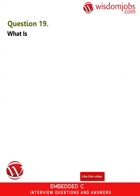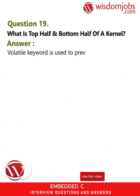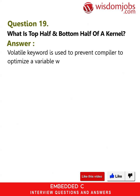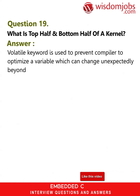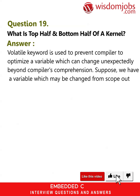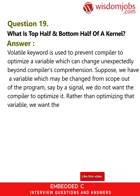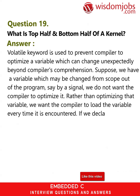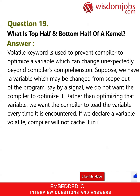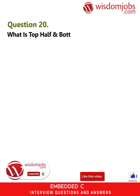Question 19: What are the uses of the keyword volatile? Answer: The volatile keyword is used to prevent the compiler from optimizing a variable which can change unexpectedly beyond the compiler's comprehension. For example, a variable may be changed from outside the program's scope by a signal. We do not want the compiler to optimize it; instead we want the compiler to load the variable every time it is encountered. If we declare a variable volatile, the compiler will not cache it in its register.